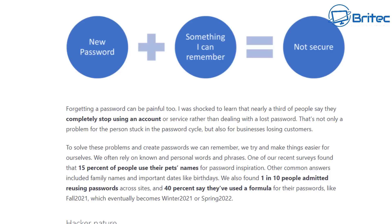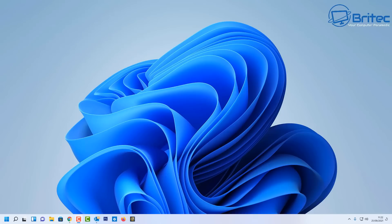Microsoft have also found that one in 10 people admitted to reusing older passwords across all of their sites, and 40% of people say they use a formula password — something like 'Fall 2021' or their name and the year they were born. People who want to exploit your passwords, like hackers, can use social engineering techniques — small talk to pick up information about pets' names, birthdays, and other details we generally divulge, and this is how they can crack your passwords.